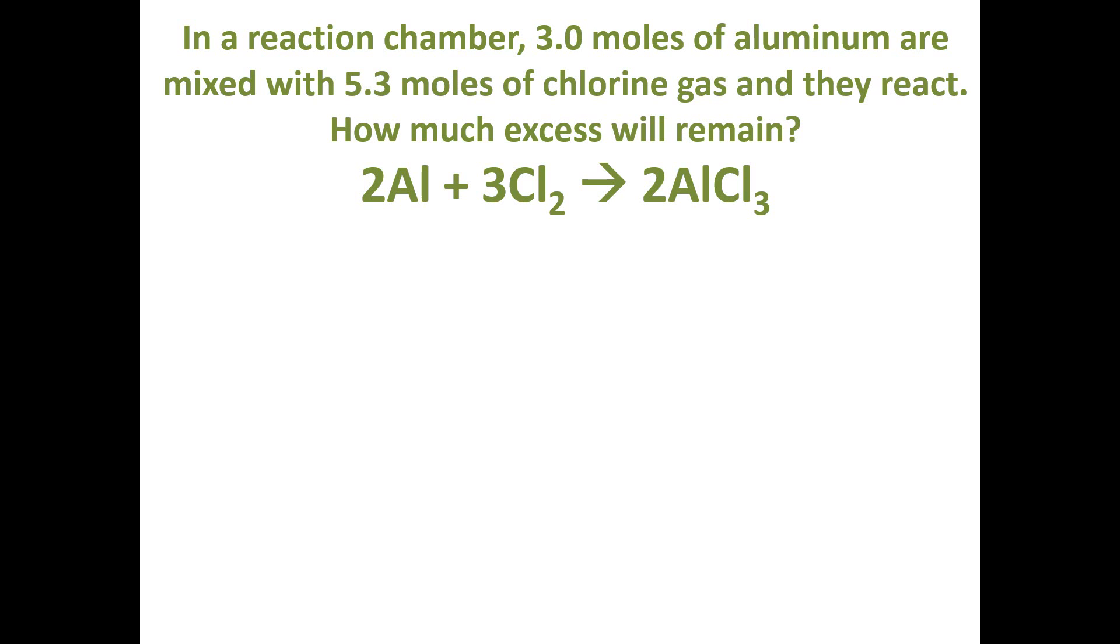In this example, our goal is to calculate the amount of excess reactant that's going to be left over after the reaction is over. We have a balanced chemical reaction: 2 moles of aluminum plus 3 moles of chlorine gas yields 2 moles of aluminum chloride.